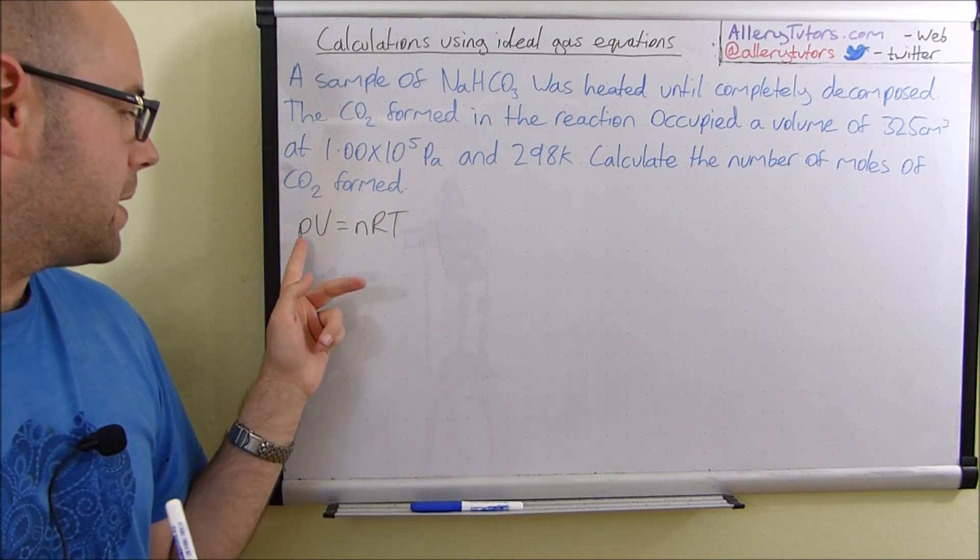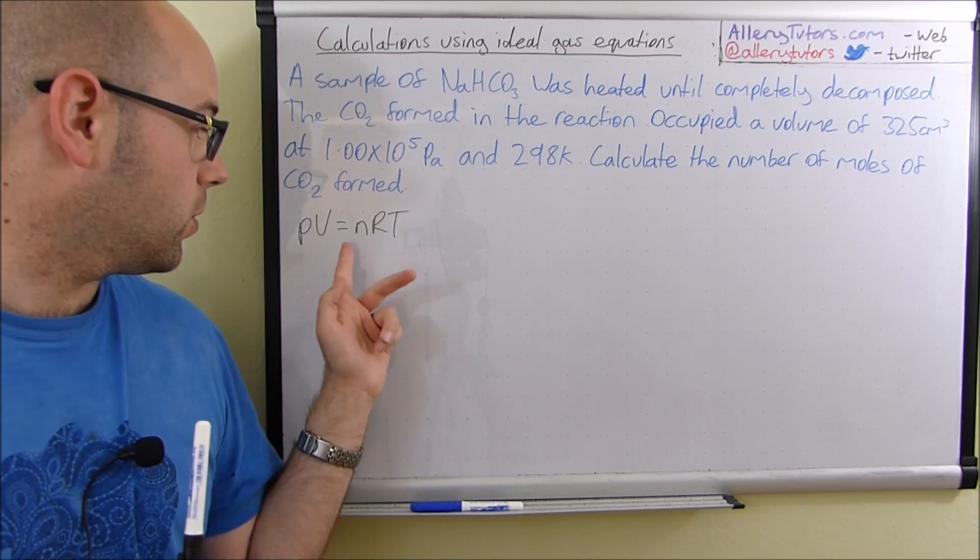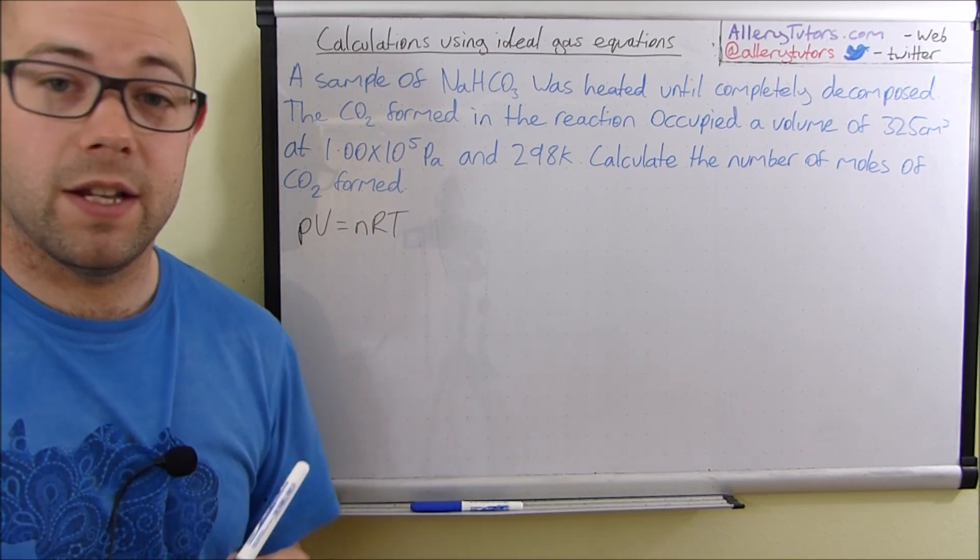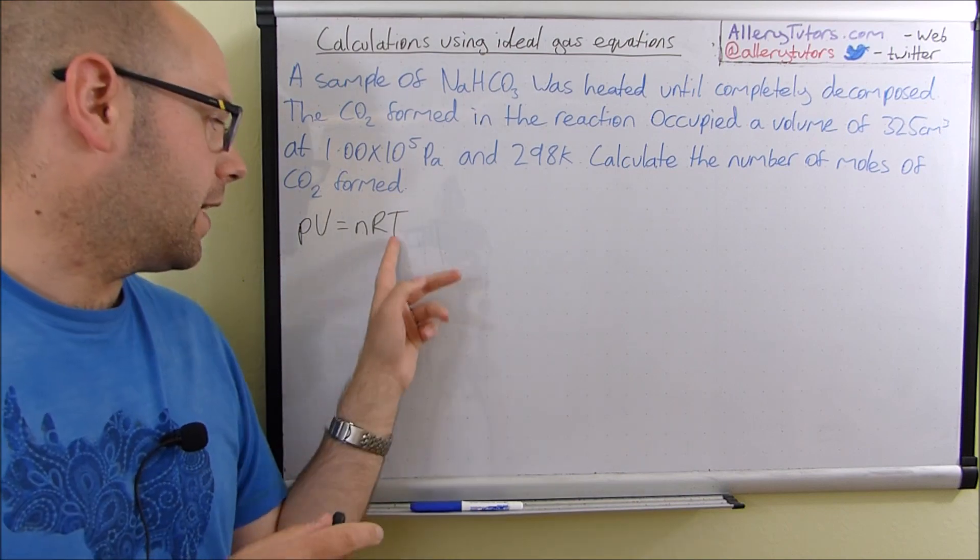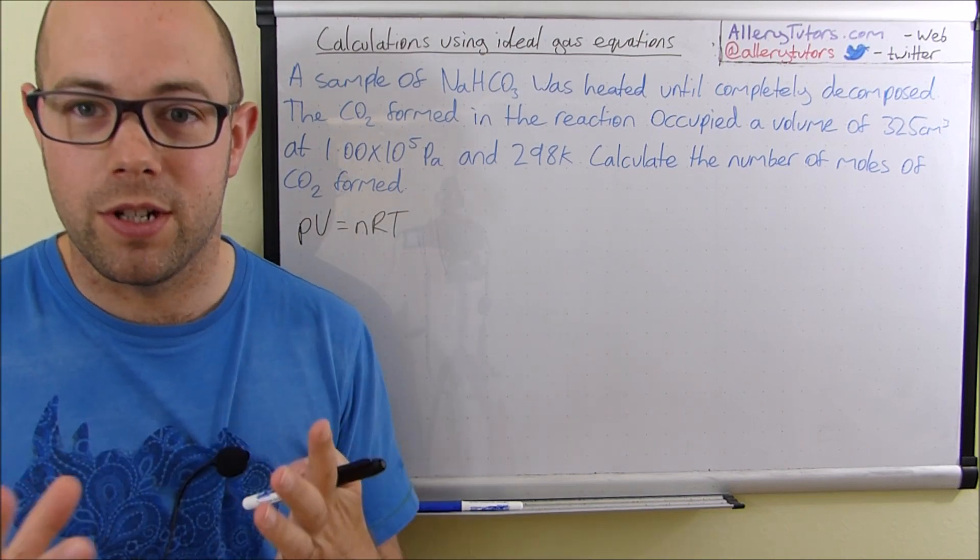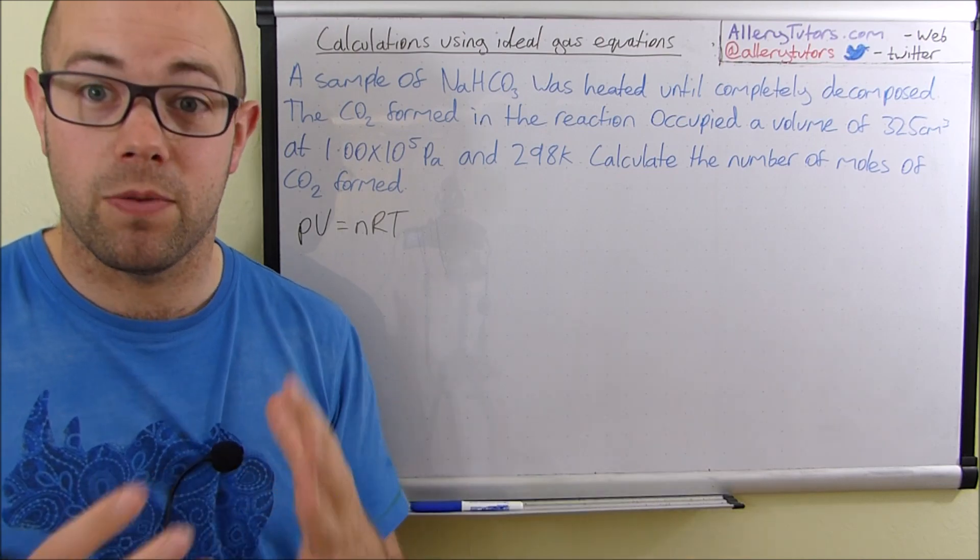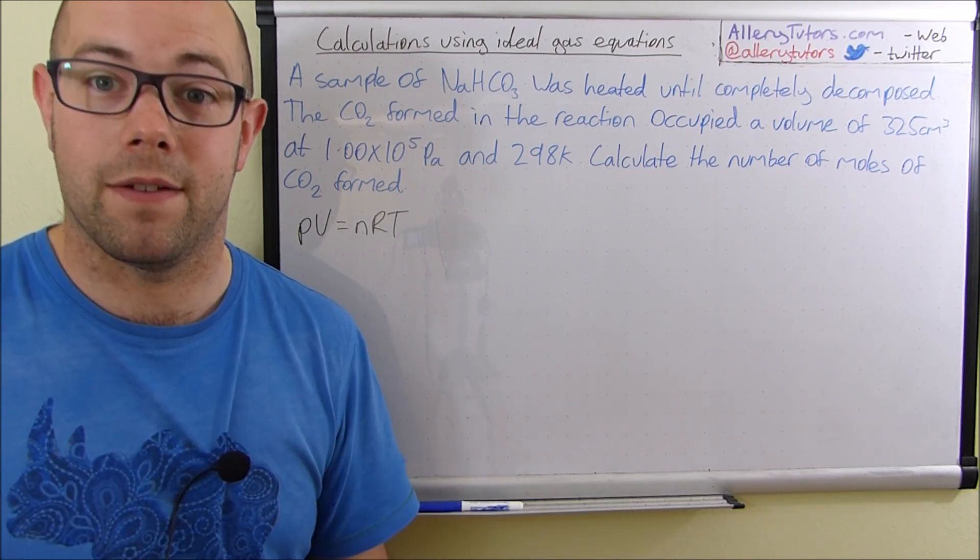So P stands for pressure, V is volume, N is the number of moles, R is the ideal gas constant which you'll be given in the exam, and T is the temperature. Now what we're going to do is go through each one and make sure they're in the right units.